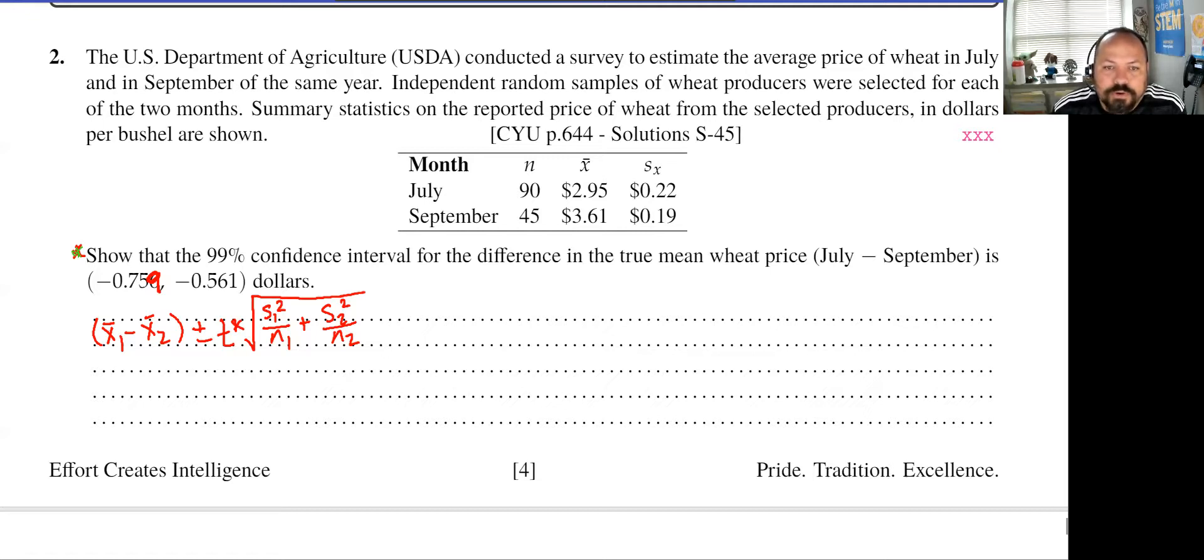times the square root of s sub 1 squared over n1 plus s sub 2 squared over n2. So for each of these, July we're going to call 1 and September we're going to call 2. So that means we're going to have, we're going to put all our numbers into the right places. We're going to have 2.95